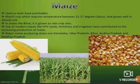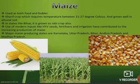Maize is used as both food and fodder. It is a Kharif crop which requires temperature between 21 to 27 degrees Celsius and grows well in alluvial soil. In states like Bihar it is also grown as a Rabi crop. Use of modern inputs like HYV seeds, fertilizers and irrigation have contributed to increasing production. Major maize producing states are Karnataka, Uttar Pradesh, Bihar, Andhra Pradesh and Madhya Pradesh.